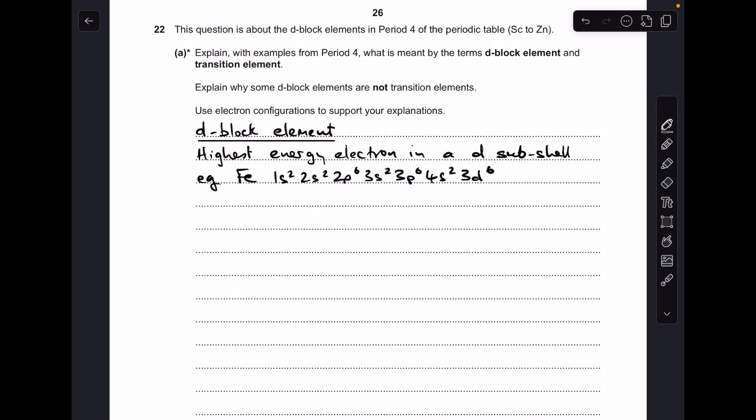Okay, so I'll make a start. The first thing I'm doing is describing what's meant by a d-block element. I've gone for iron, so all you would need to say is that it's in the d-block because its highest energy electron is in a d-subshell.